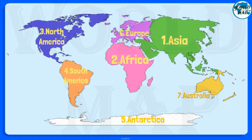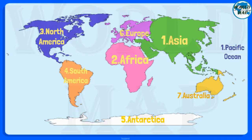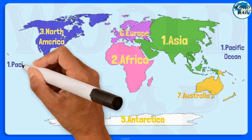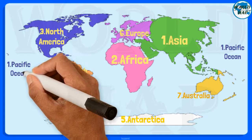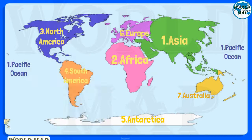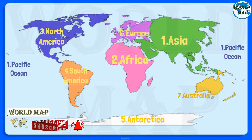What are the five oceans of the world? Number 1: Pacific Ocean. The Pacific Ocean is the largest ocean, covering more than 30% of the Earth. This is close to half of the water on Earth.